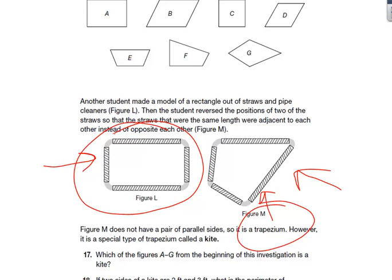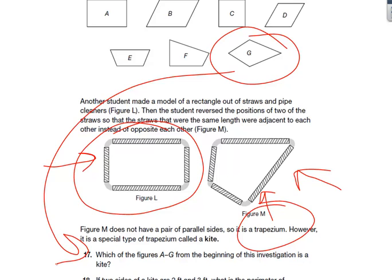If two sides of a kite are two feet and three feet, what is the perimeter of the kite? Looking at question 17: which of the figures A through G from the beginning of the investigation is a kite? That's G. Now, if the two sides were two feet and three feet, what would the perimeter be? That would be 10, because you'd have two and three and two and three, which equals ten.